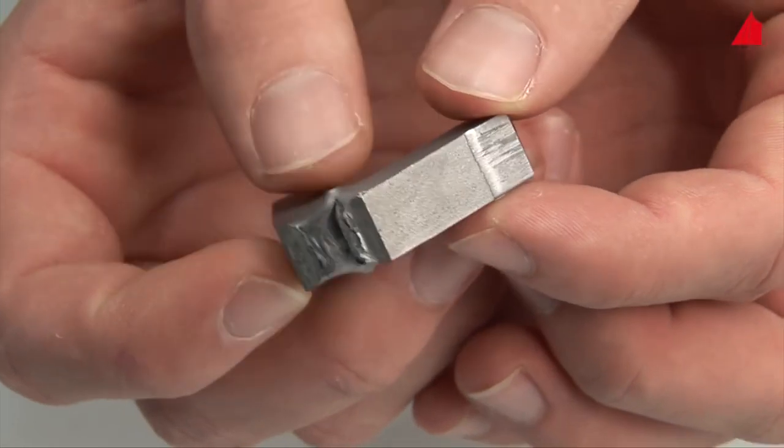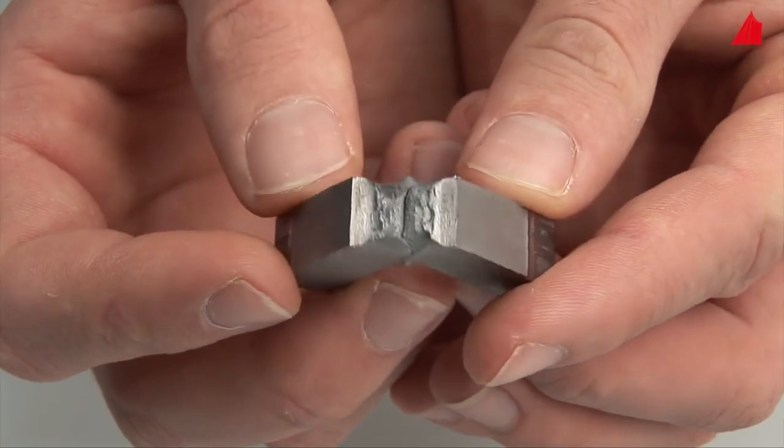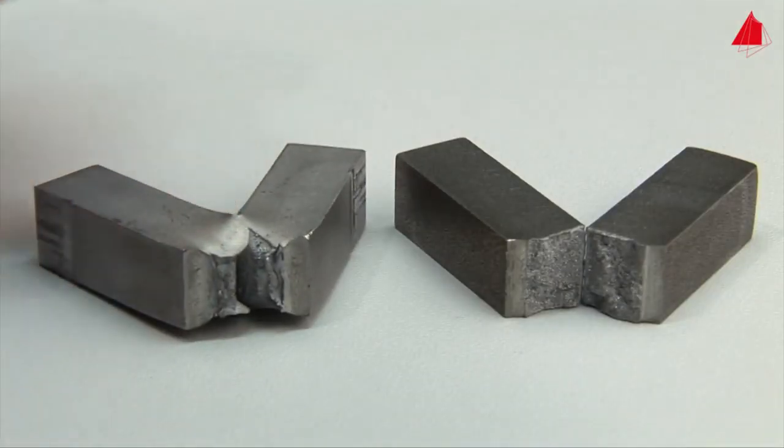Here the specimen did not break into two pieces. Instead it was pushed through the counter bearings under heavy plastic deformation. In comparison with the strain aged steel, the normalised steel absorbs much more notch impact energy and behaves in a very tough manner.